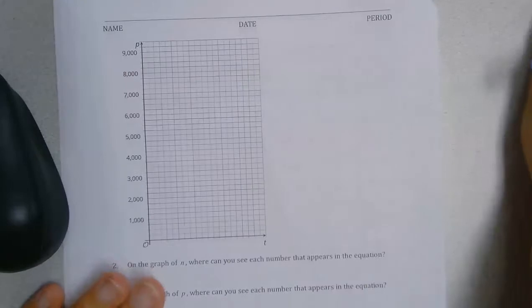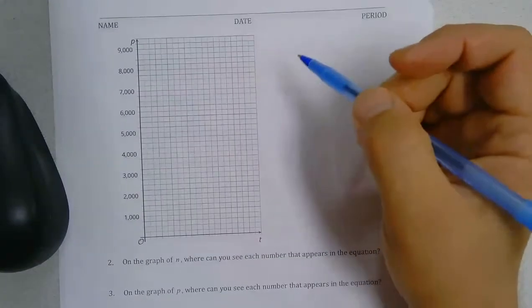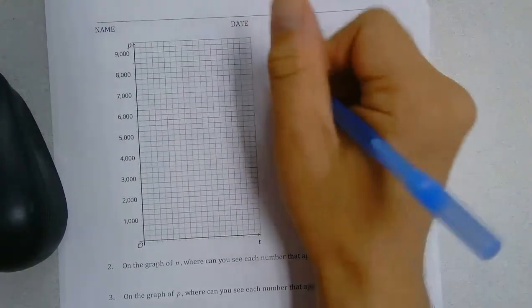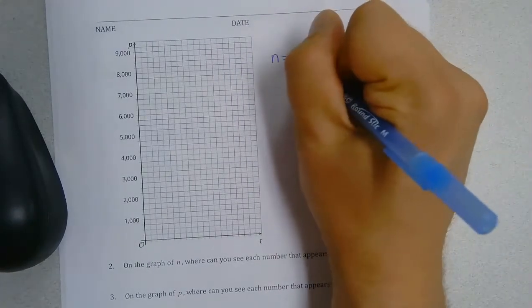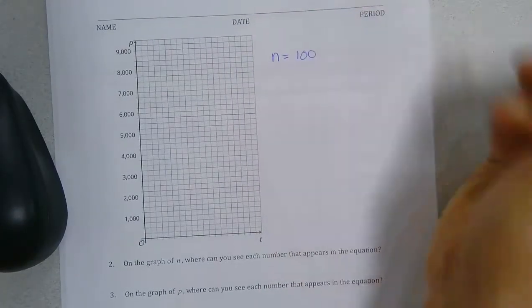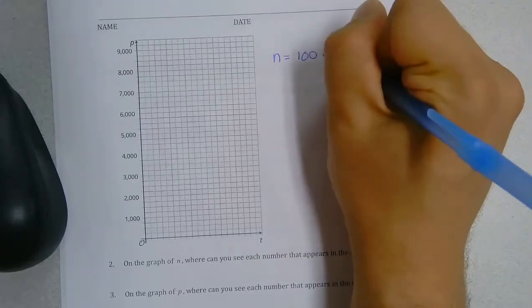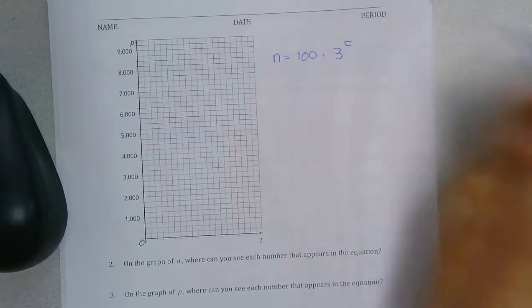So what we're going to do next is do the other graph. So if you remember the other graph, the number of parasites was 100 times 3 to the t.